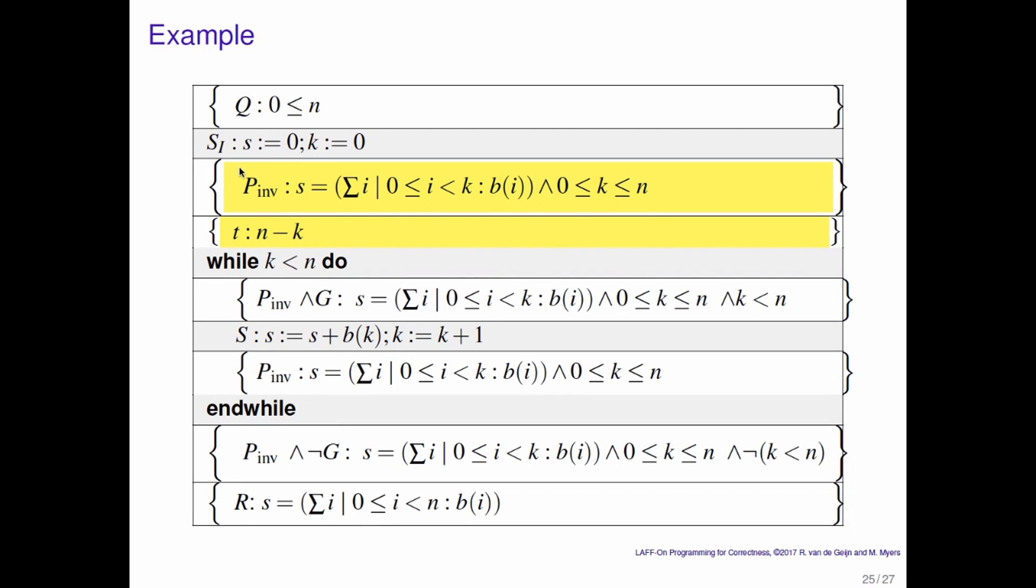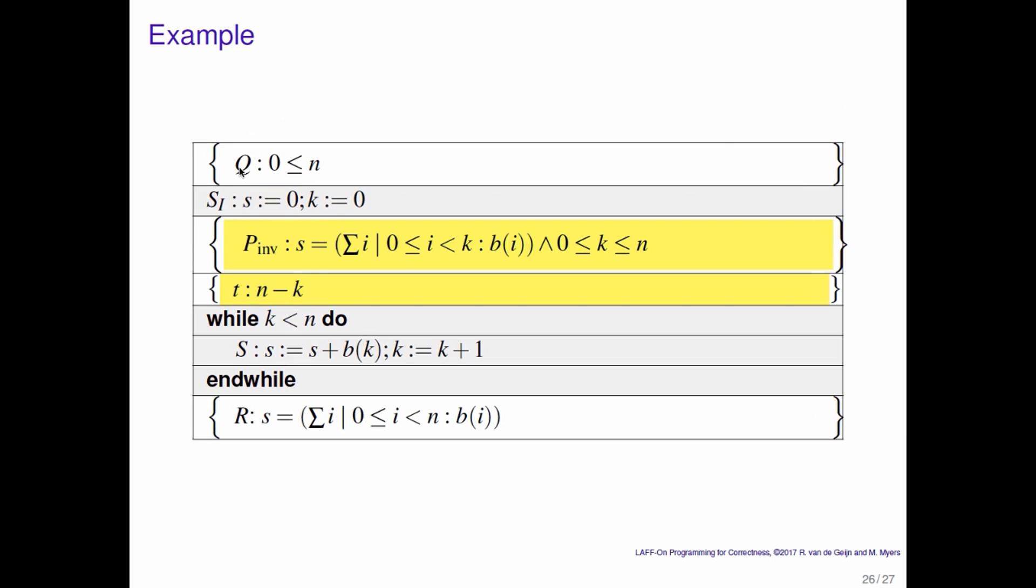Now notice that not only should we indicate the loop invariant now, but we should also indicate what the bound function is when we present an algorithm. So here's the worksheet that we have been using all along. We have the loop invariant in a lot of different places, we have the loop guard in a lot of different places, and now we have this bound function to deal with. Now notice that we only really need to indicate what the loop invariant is once because we know where it then needs to be true, and we only need to indicate the bound function somewhere because we know what to do with it. And that means that often when people present an algorithm, they present it in the shortened version where the loop invariant is given just before the loop, as is the bound function.